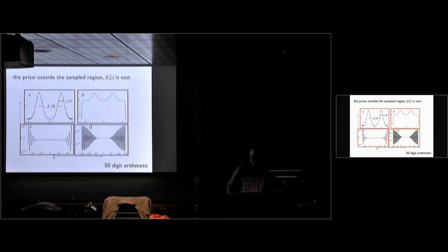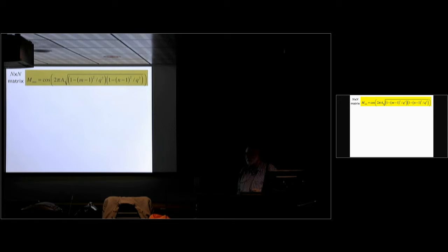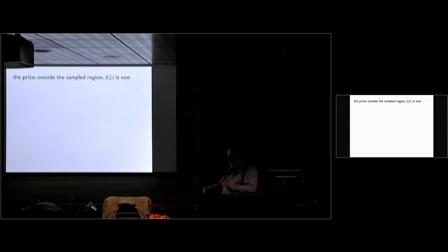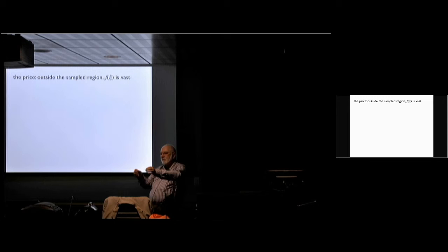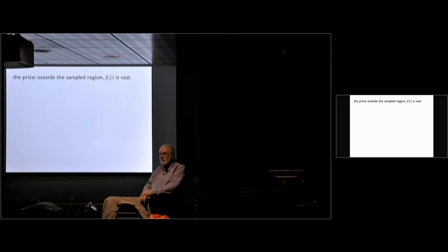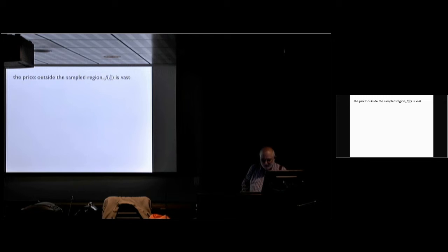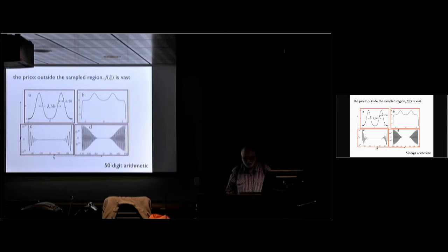But the price you pay is that outside the reconstructed region the function is absolutely vast. We've got the object in the reconstructed region from minus one to one in this notation. A little bit outside, it starts to go. If you go from minus forty it gets to 10 to the 39, and finally it stops growing at about minus 150 — but at 10 to the 60. So you need 50-digit arithmetic to do these calculations because they are not very stable.